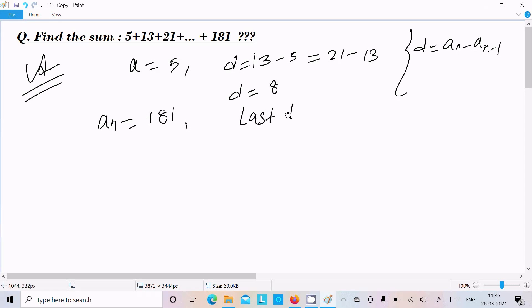And here a_n, nth term is 181, and last term L equals 181. Now the a_n formula we already know: a_n equals a plus (n-1) times d. Here 181, a value is 5, n we need to calculate, d is 8.